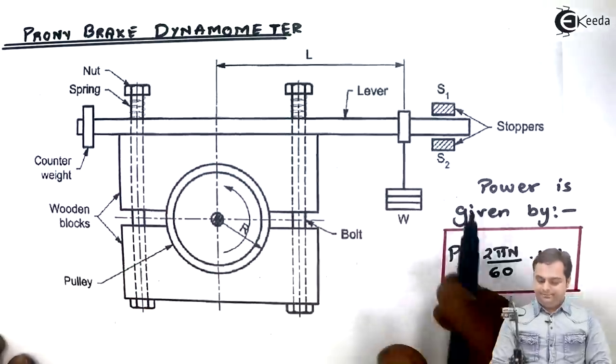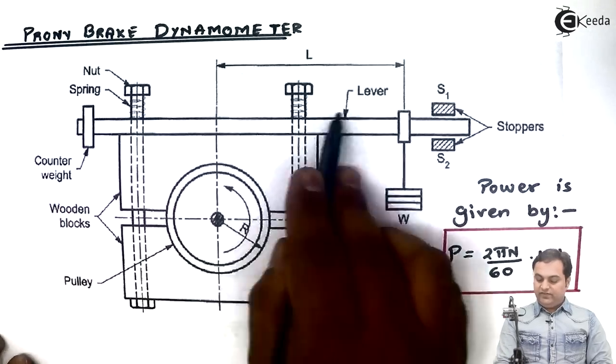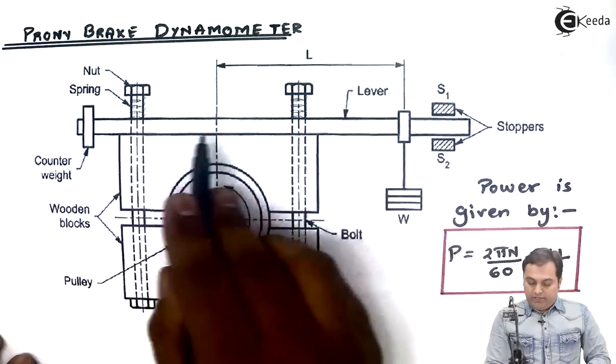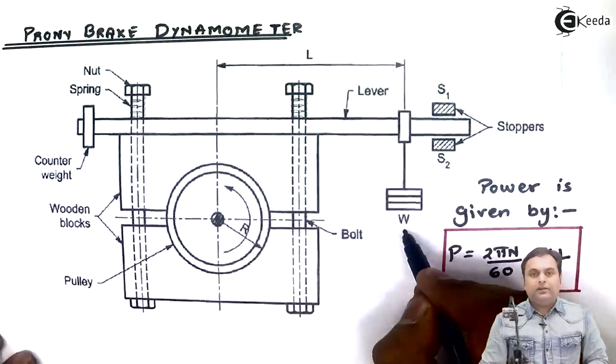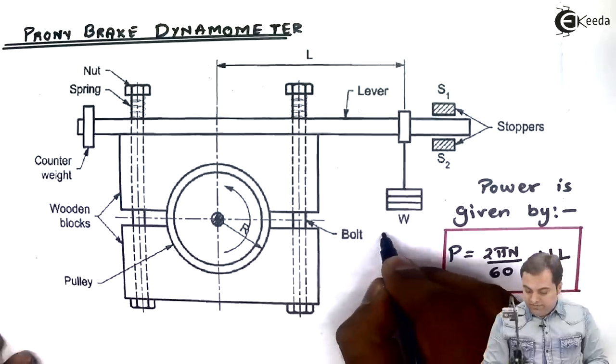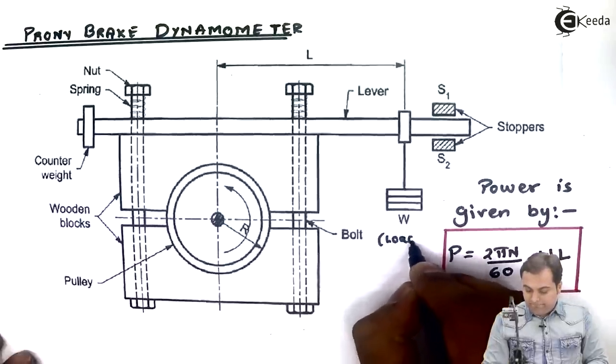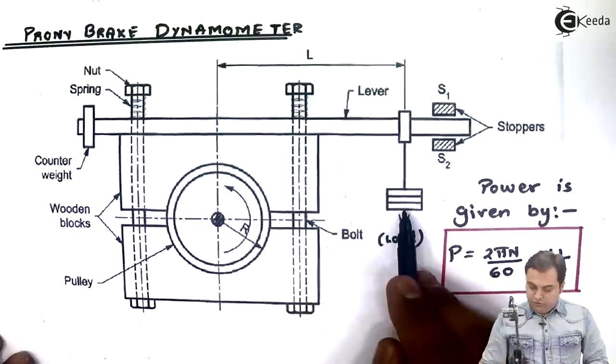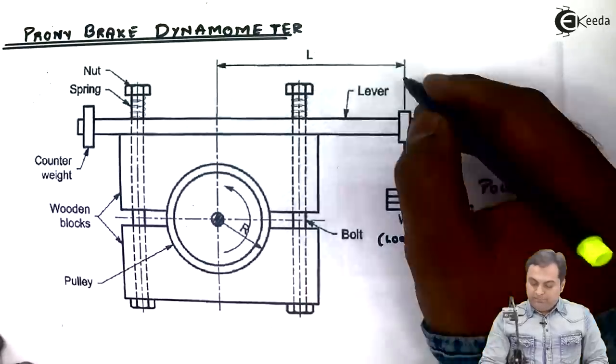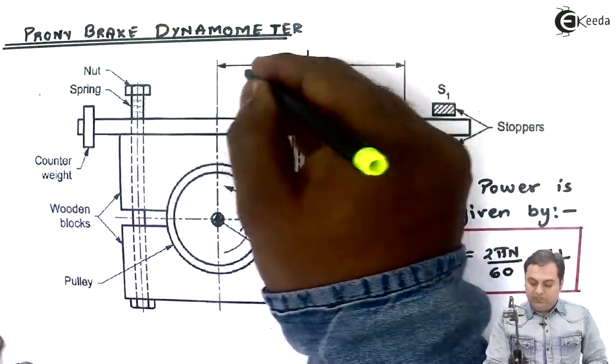Next we have a lever. As we can see, from the center of the shaft to the point at which we are applying the load, this W indicates the load which we apply. From the center of the shaft to the load, we call it as L which is the length of the lever considered.